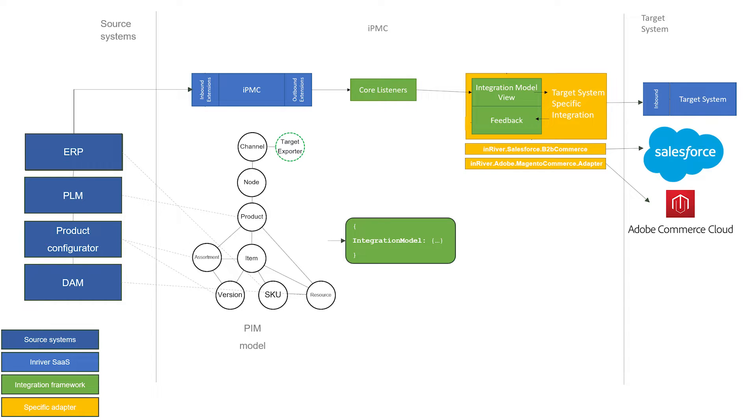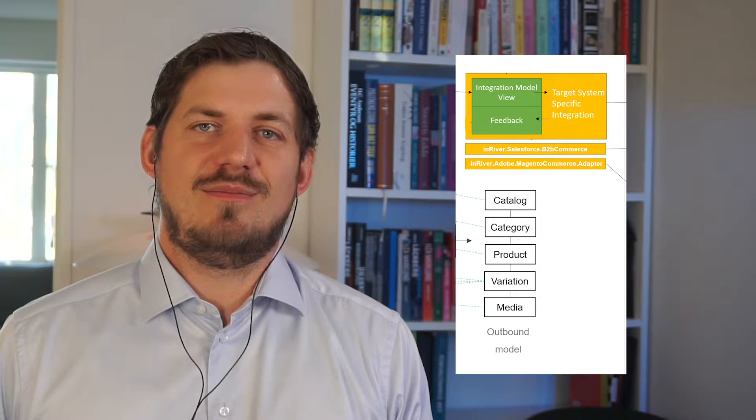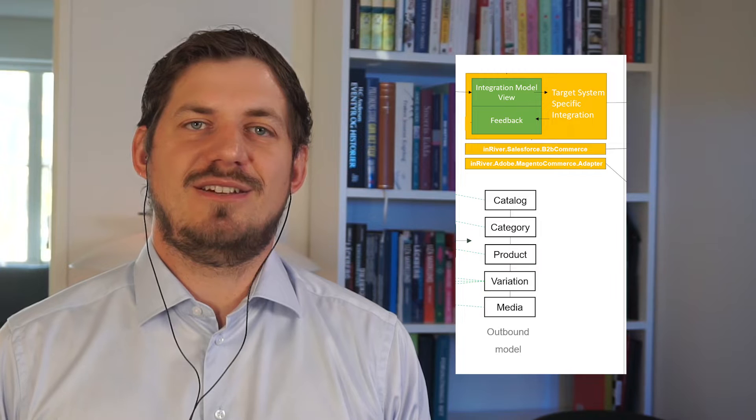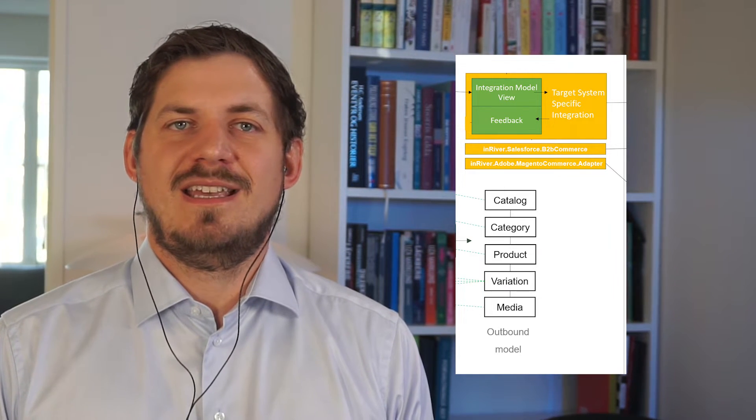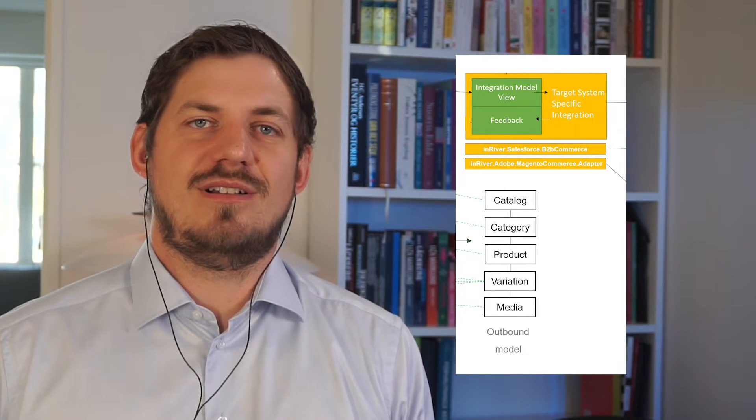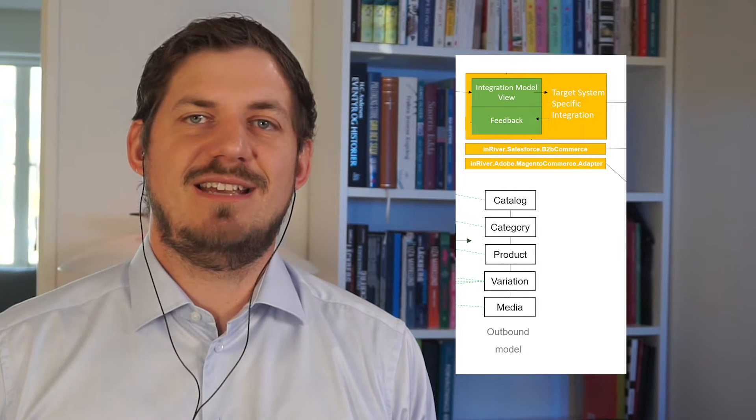The PIMP model is mapped into the framework using the integration model. The integration model is a JSON document that maps PIMP to the outbound model. This outbound model is generic and defined by the integration framework. Keeping this model generic makes sense as it enables higher quality standard adapters, but it does not fit with every PIMP model out there.